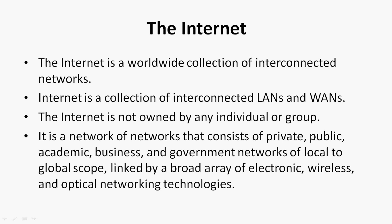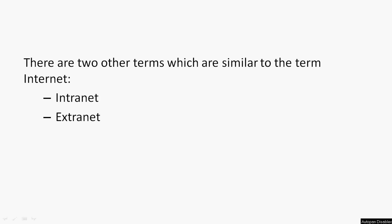The internet is not owned by any individual or group. It is a network of networks that consists of private, public, academic, business, and government networks of local to global scope, linked by a broad array of electronic, wireless, and optical networking technologies.